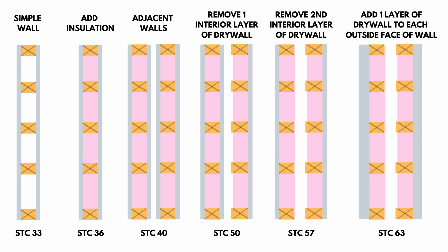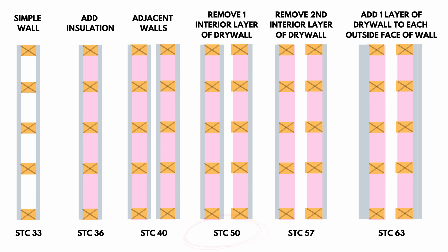That's not very good, and you're probably surprised — logically, two walls side by side should be soundproof, right? But the problem is the air gap got smaller between the two walls. Now if we take one of our drywall layers out, you can see the STC rating increases, but it's still not great — in this case you get an STC of 50.